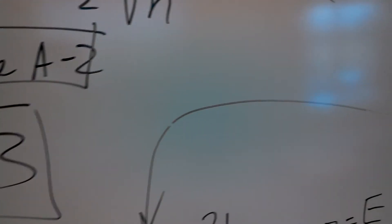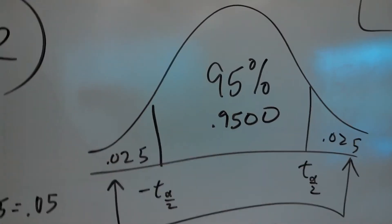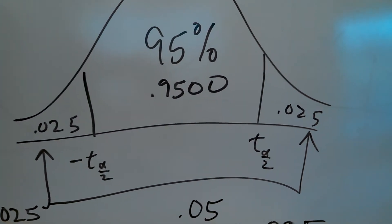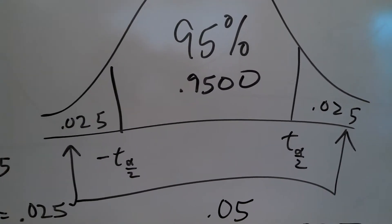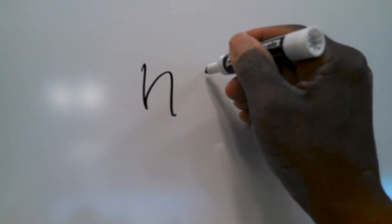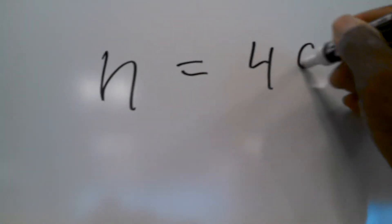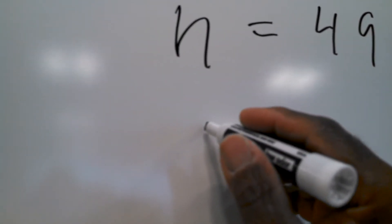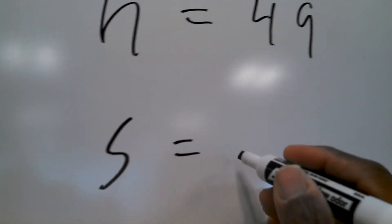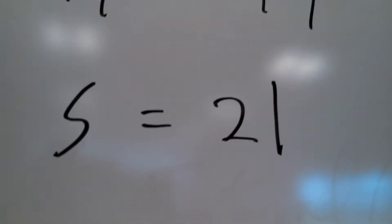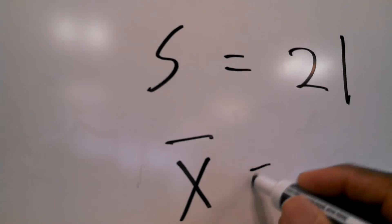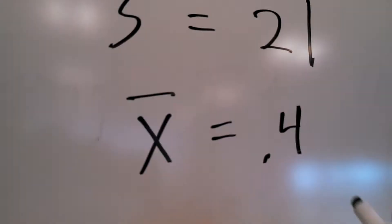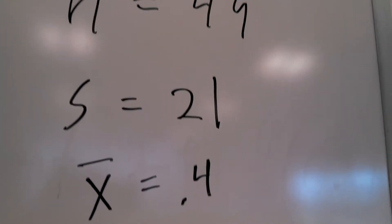Here is an example. We want to find the 95% confidence interval given the following: the sample size N equals 49, the standard deviation of the sample S equals 21, and the sample mean x-bar equals 0.4.